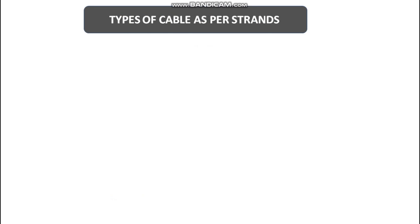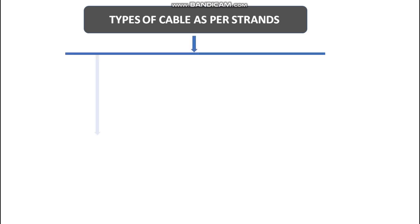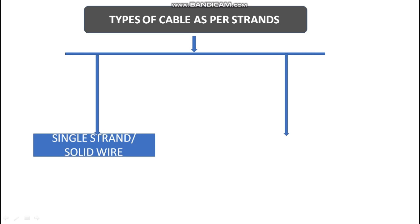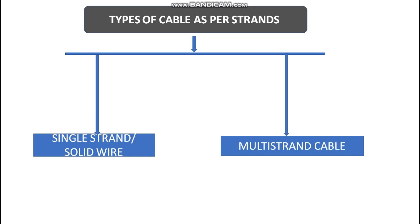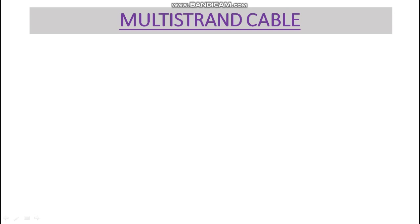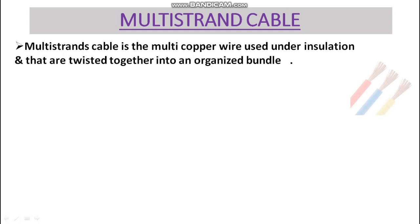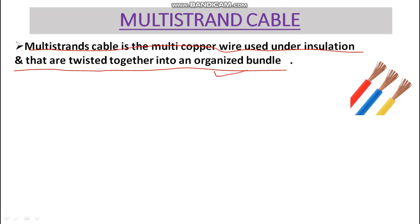So basically, what are the types of cable as per the strands? There are two types: one is single strand, or we can say solid wire, and another is multi-strand cable. First, let's discuss about multi-strand cable. Multi-strand cable uses multiple copper wires under the insulation that are twisted together into an organized bundle.